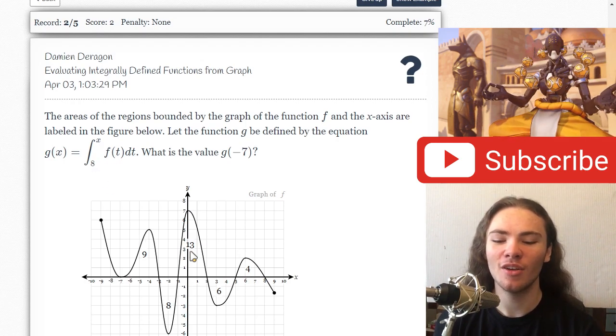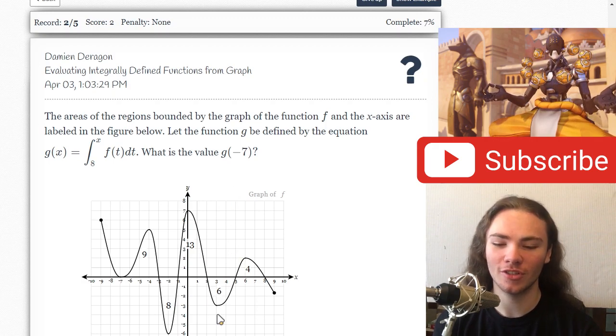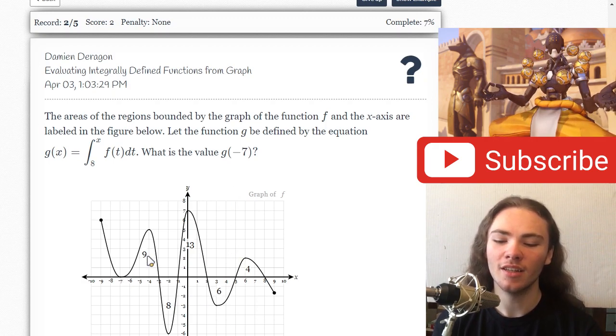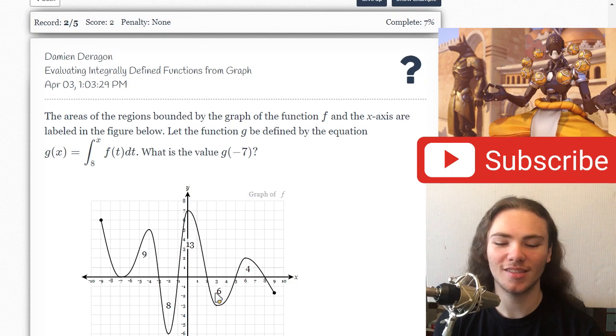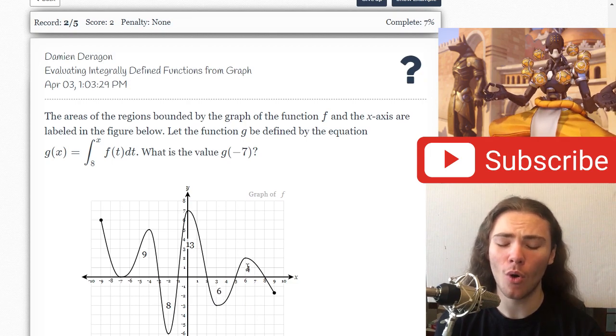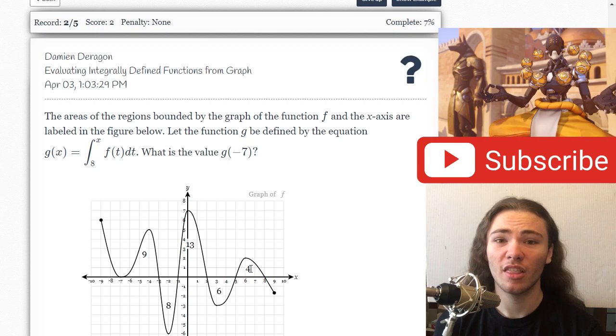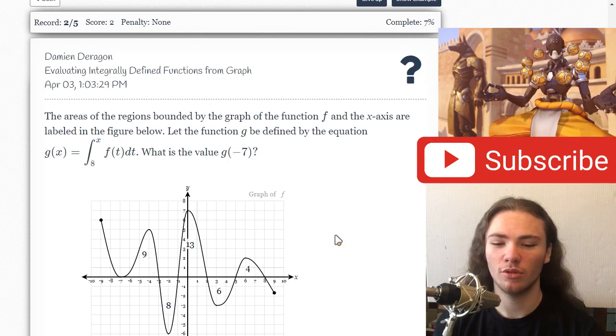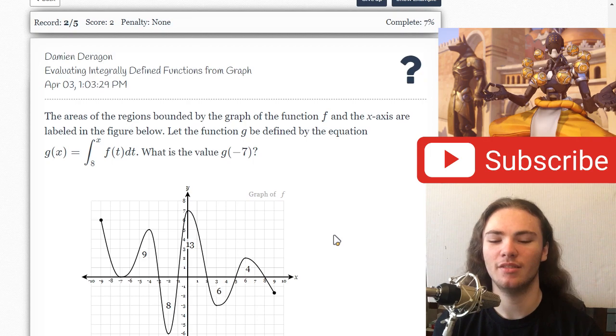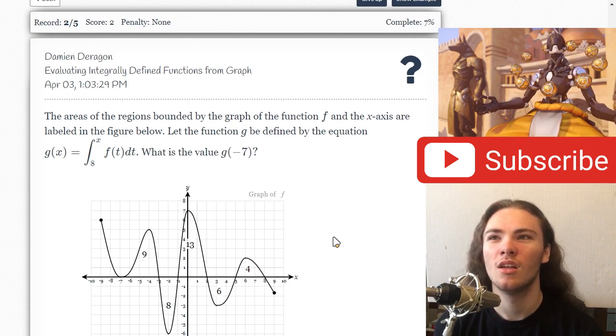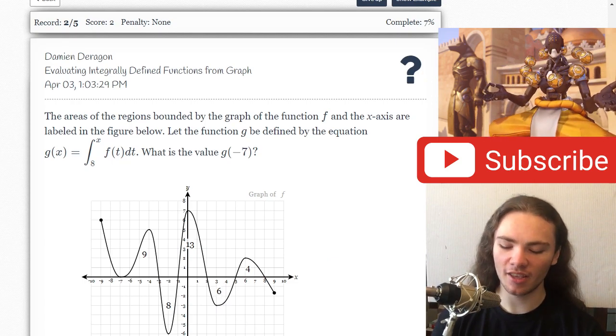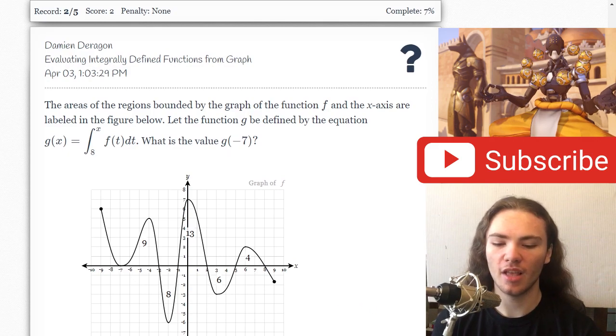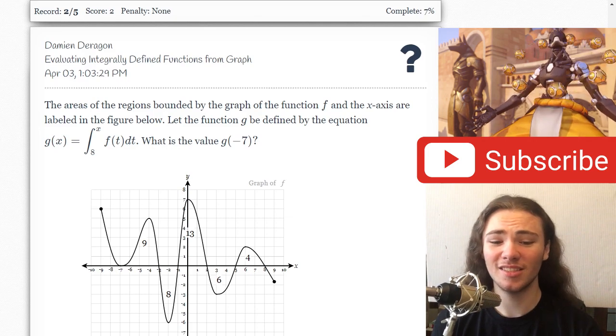So negative 7 to 8 would make it negative, because negative comes first. So it's going to be like negative 9 plus 8 minus 13 plus 6 minus 4. And I think that comes out to 17 minus 9, negative 26 plus 14. And I think negative 26 plus 14 is like 12. So I'm going to put 12 in the answer box. And let's just see if that works.